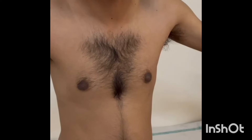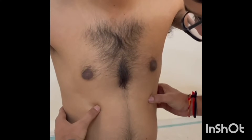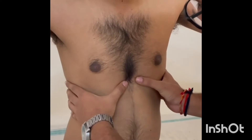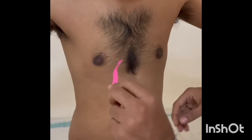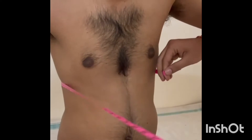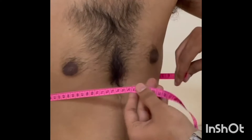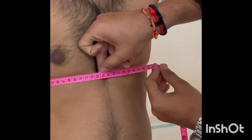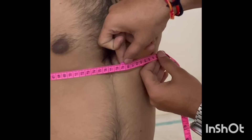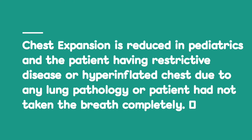Normal value at xiphisternum level is 5 to 6 cm. Chest expansion is reduced in pediatrics and in patients having restrictive disease or hyperinflated chest due to any lung pathology, or in patients who had not taken the breath completely.